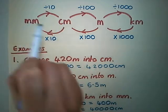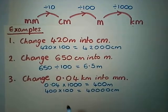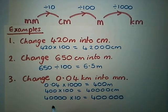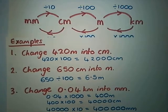The last step is to get from centimeters to millimeters, so we're going to times by 10. We've got 40,000 centimeters times 10, which equals 400,000 millimeters. That's the answer to those three examples.